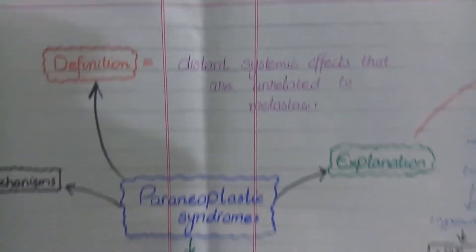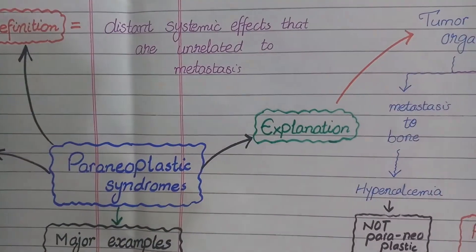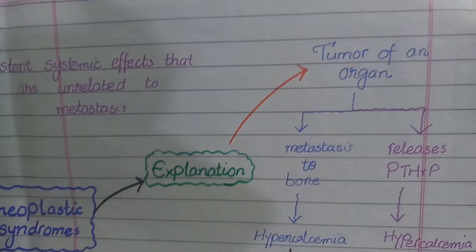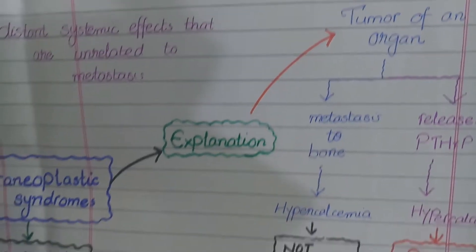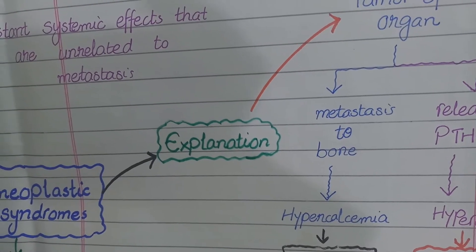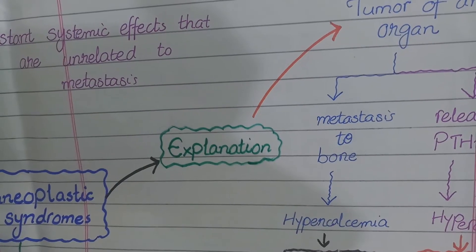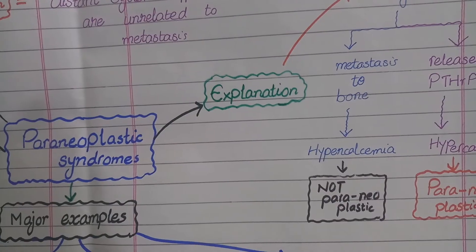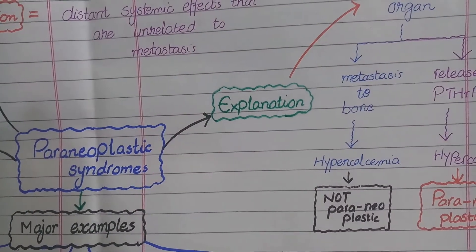In order to understand the definition, let's move to the explanation part of this mind map. Let's suppose there is a tumor that develops inside an organ. This tumor metastasizes into bone, and when these metastatic tumor cells enter bone, they cause breakdown of bone which releases calcium into the blood, causing hypercalcemia. The tumor has caused hypercalcemia, but we cannot call it a paraneoplastic syndrome because it is directly related to metastasis.